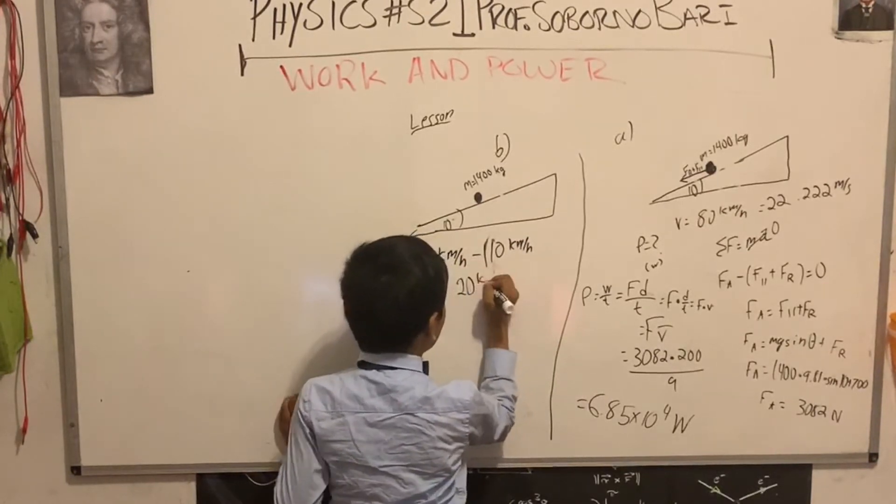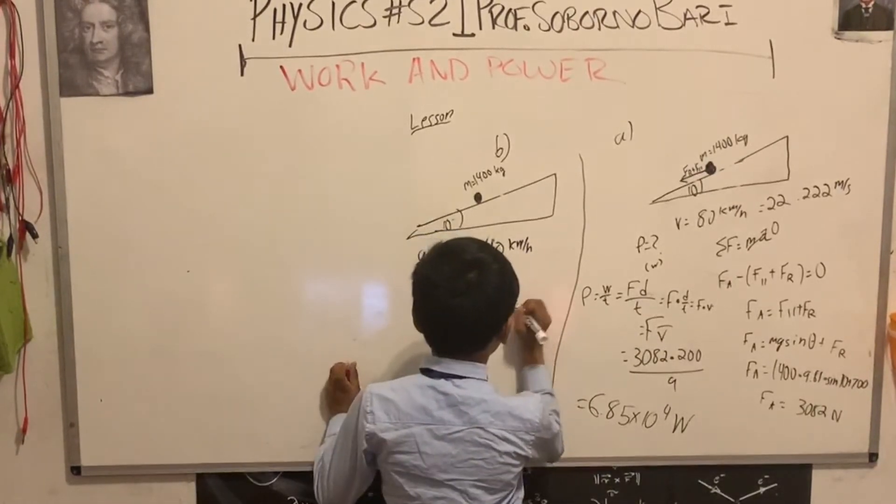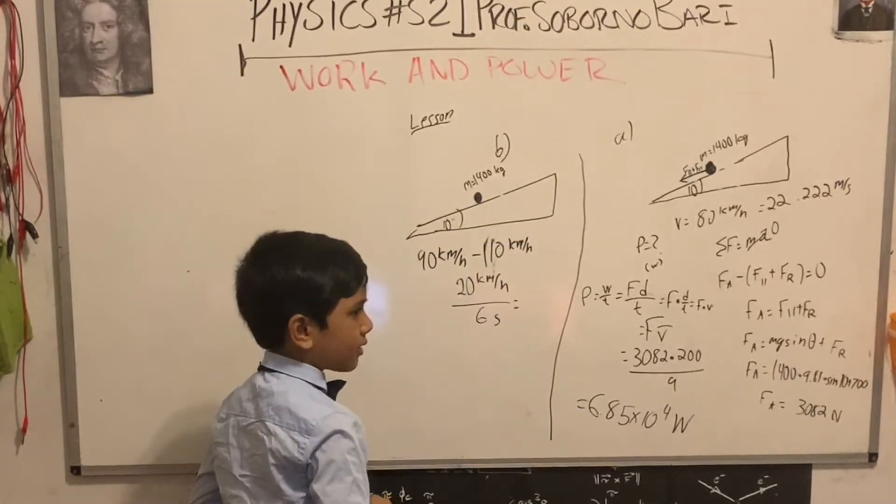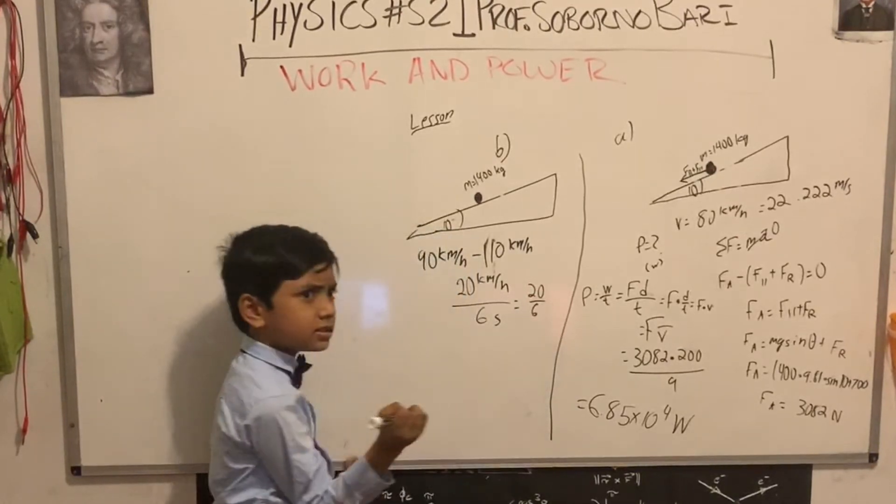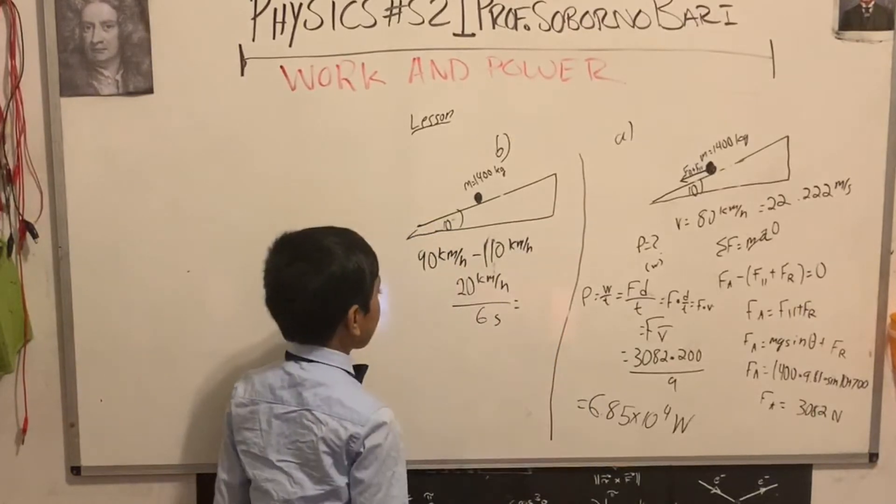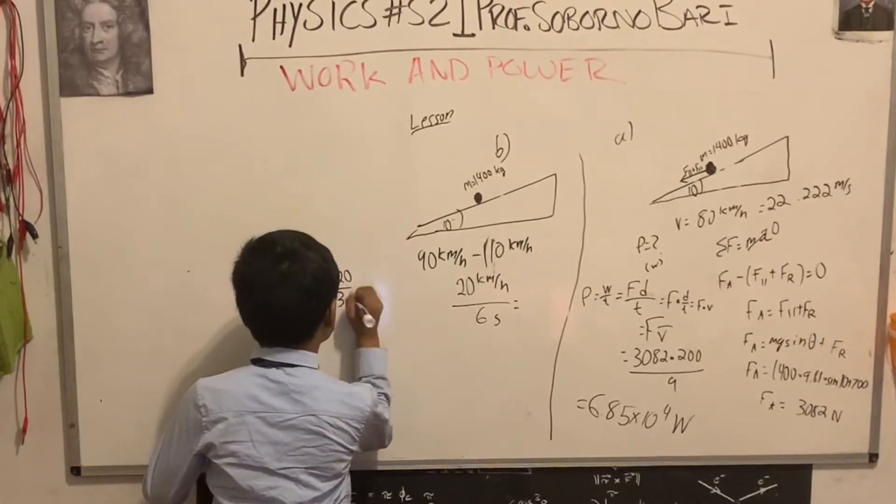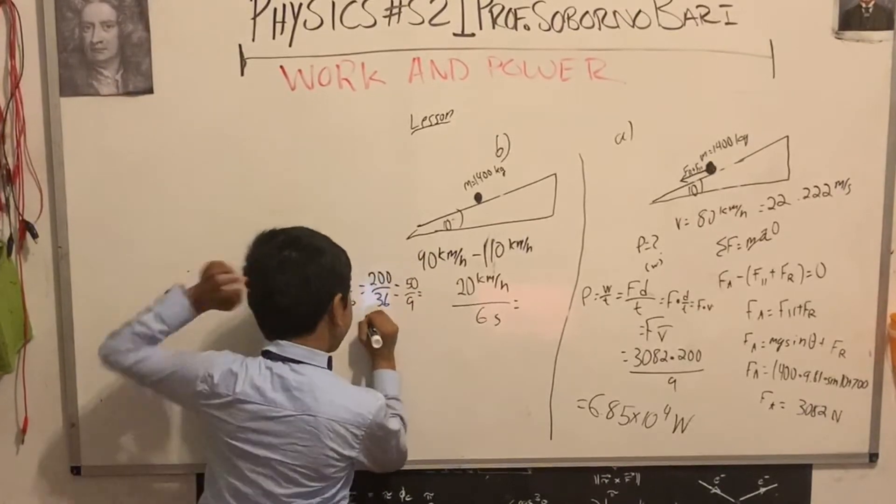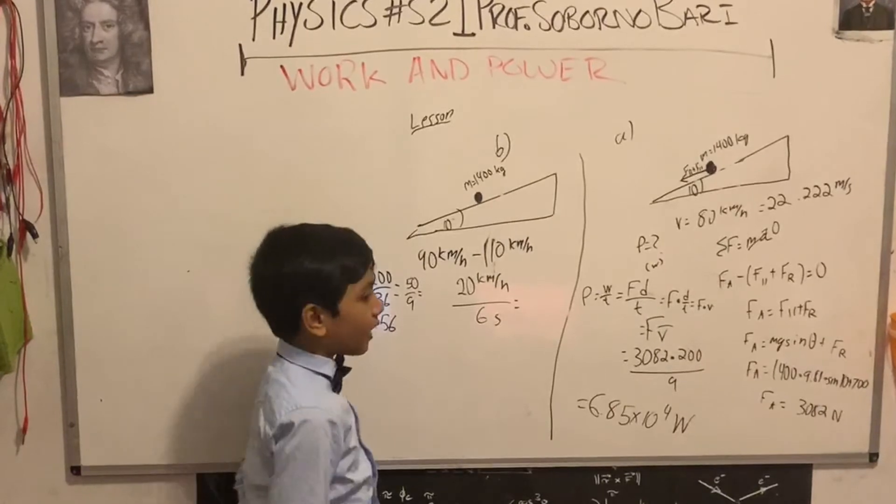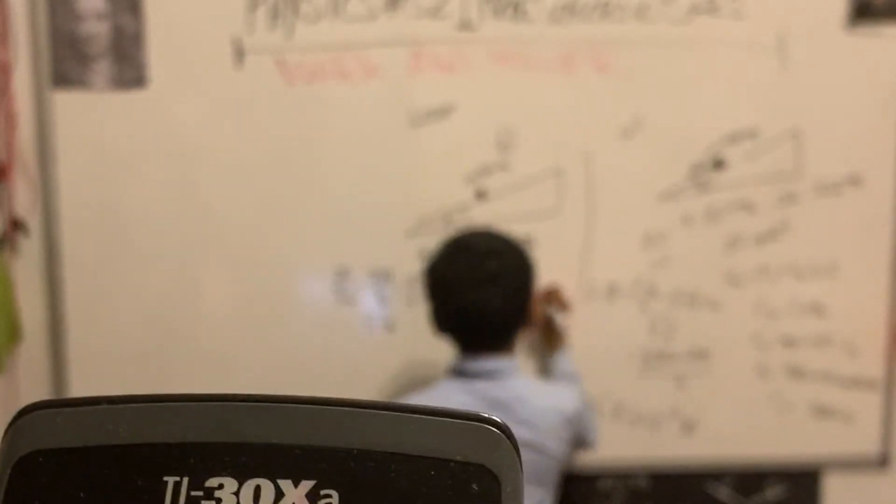In meters per second, that would be an increase of 20 kilometers per hour. 20 kilometers per hour has to be meter per second. That's 5.5, 5.56. It doesn't matter. 5.6, Professor. Okay.